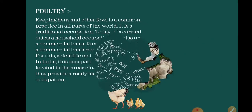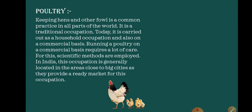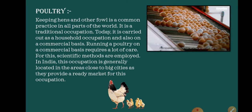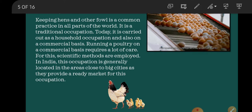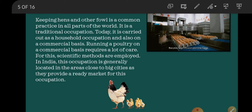Next comes poultry. Keeping hens and other fowl is a common practice in all parts of the world. It is a traditional occupation. Today it is carried out as a household occupation and also on a commercial basis. Running a poultry farm on a commercial basis requires a lot of care. In some areas rabbit, pig, and emu birds are also reared.